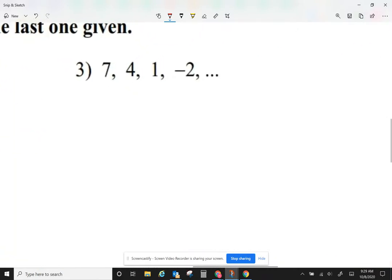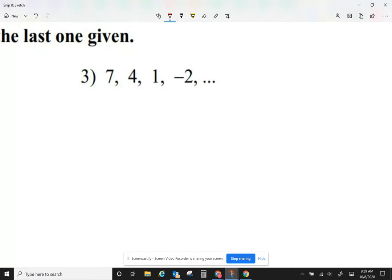Let's take a look at number 3. For 7 to become 4, I could subtract 3. For 4 to become 1, I could subtract 3. Here, I could subtract 3 as well. So, it seems like I'm subtracting 3 each time. I'm going to say my next number should be negative 5.